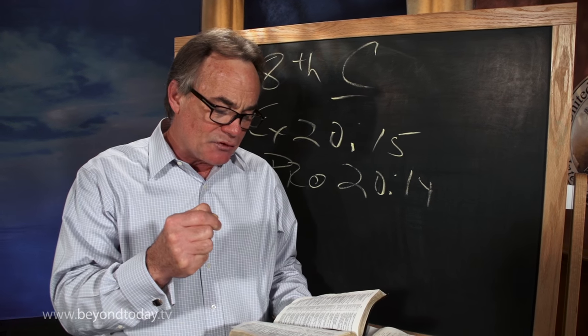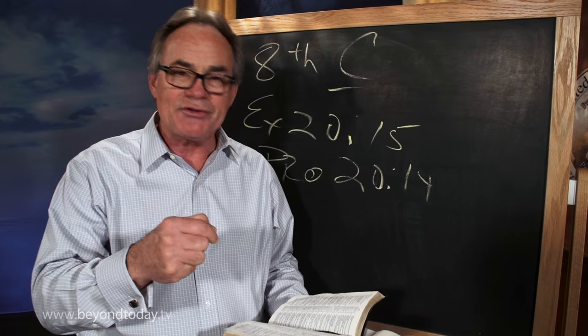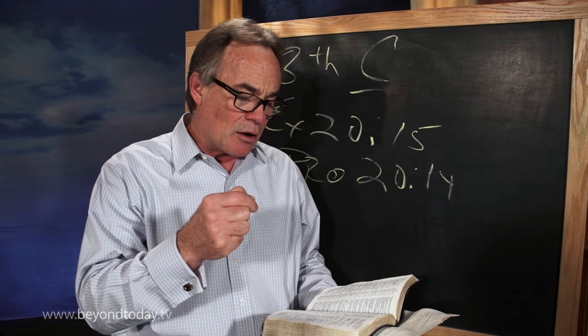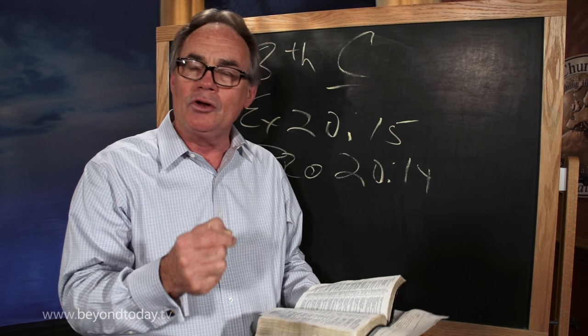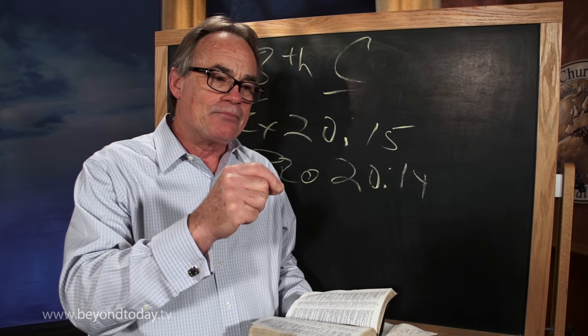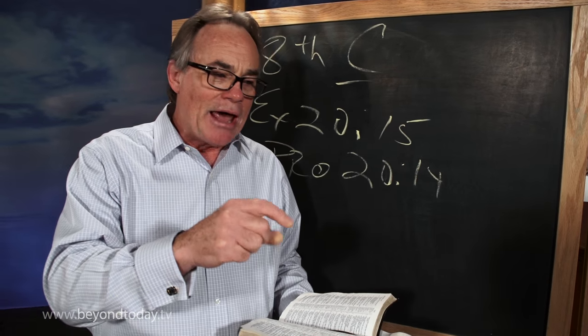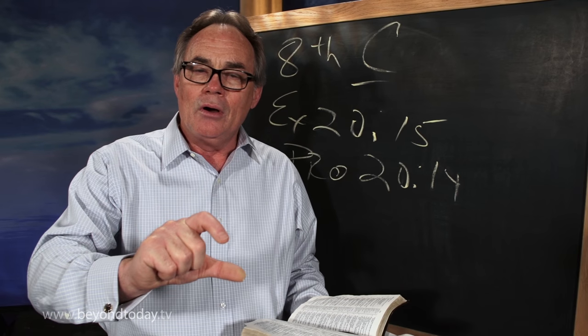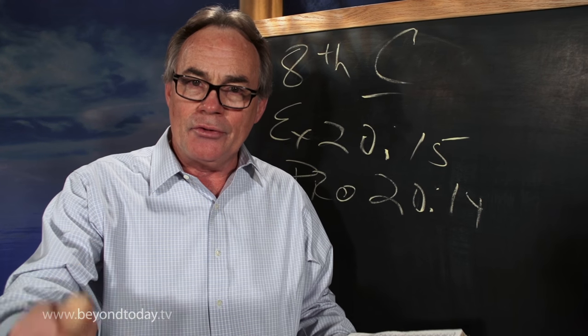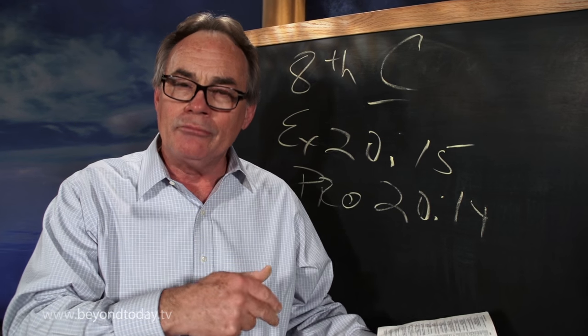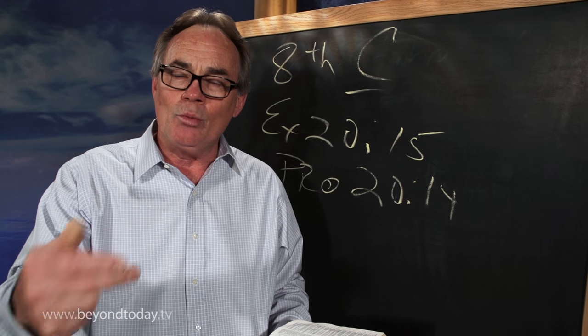And even in verse 10, it talks about diverse weights, different measures that are both alike and are an abomination to the Lord. In other words, God wants a business person to have an accurate scale measure of what it is they may be selling, giving out to their customer in return for cash, being accurate in what they deliver.